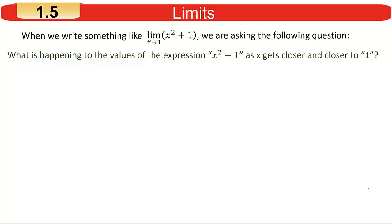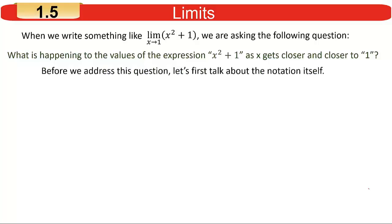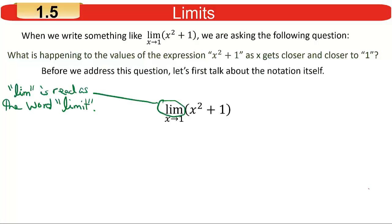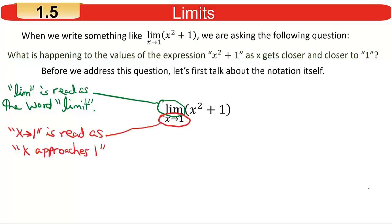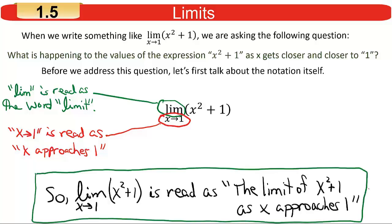Look at that notation and see how I get that information out of that expression. In particular, look at the way we're going to write and read this. The LIM is read as the word 'limit.' Underneath that, the x with the arrow pointing to the right toward the number 1 is read 'x approaches 1.' So that entire expression would be read as 'the limit of x squared plus 1 as x approaches 1.'